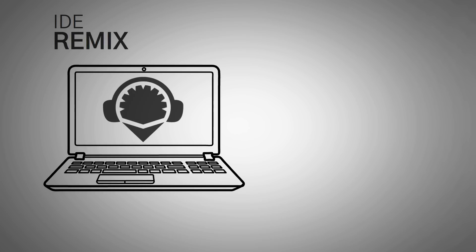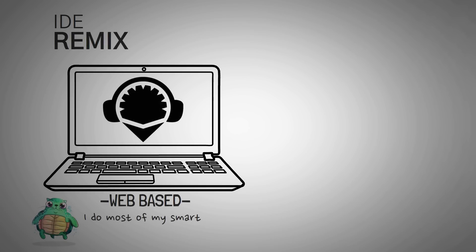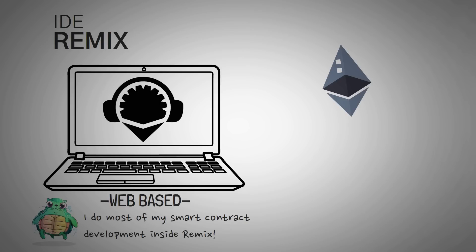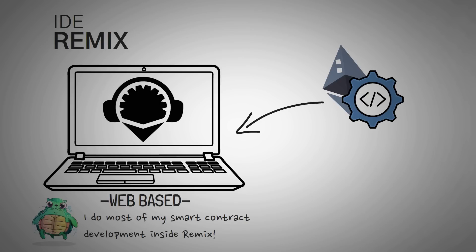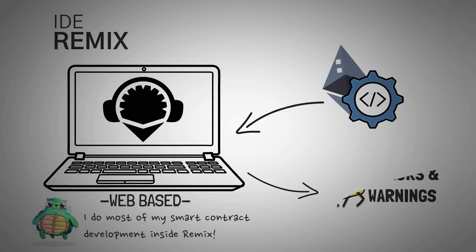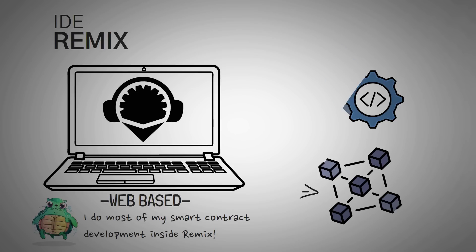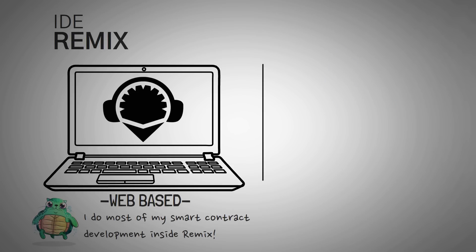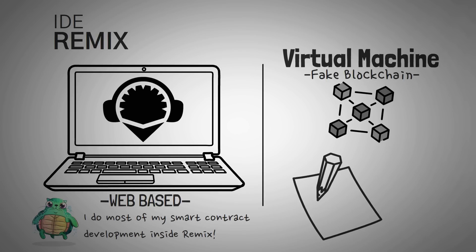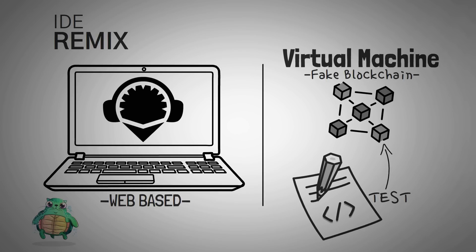First up is Remix. Remix is an IDE that can actually be used inside a web browser. I do most of my smart contract development inside a web browser using Remix. Remix allows you to write any Ethereum code, it tells you errors about it, shows your warnings, and you can even deploy a smart contract straight through Remix itself. They also have a virtual machine — a fake blockchain — where you can test your smart contracts without deploying them for real money.